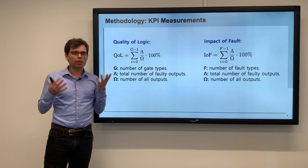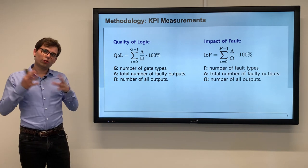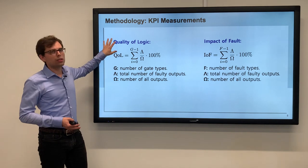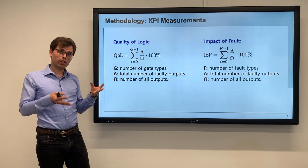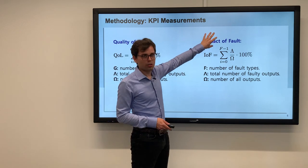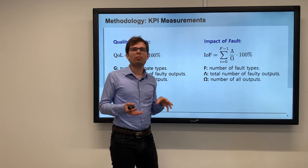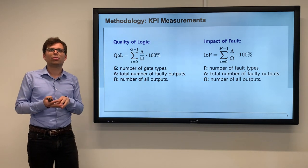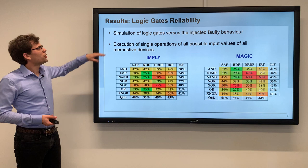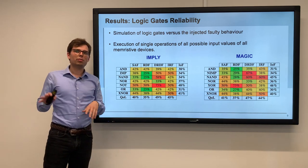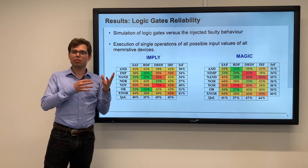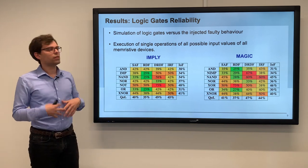We developed two KPI measurements to understand the impact of faults on logic operations: quality of logic and impact of faults. The idea is to assess for each fault type how high the quality of logic is — whether the logic operation adheres to the actual operation it should perform. The impact of fault metric measures the impact of one individual fault across all different logic operations. We summarize this in a logic gate reliability chart, simulating logic gates versus injected faulty behavior.